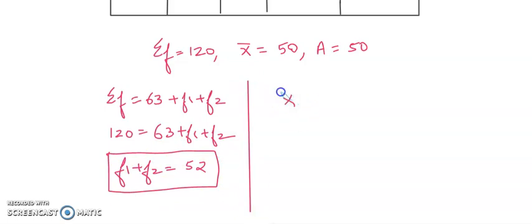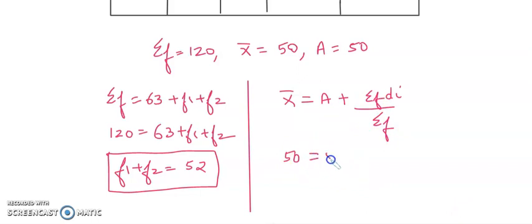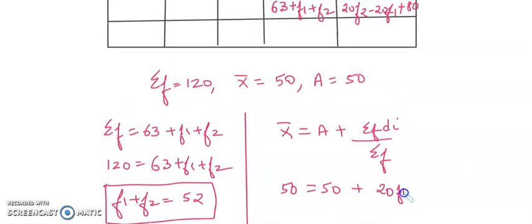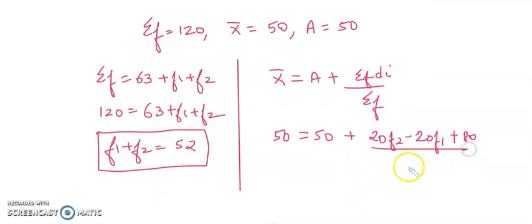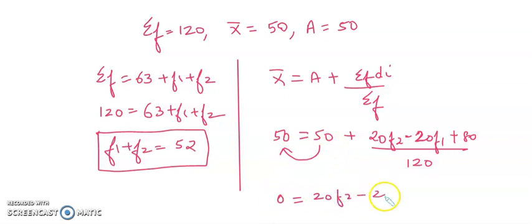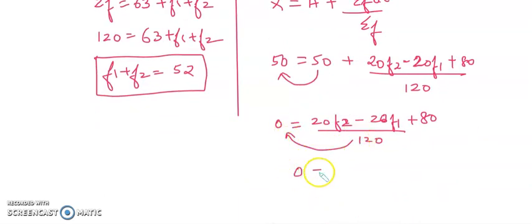Now for the second equation, use the mean formula: A plus sigma f*d_i divided by sigma f. X-bar is 50 and A is also 50. So 50 equals 50 plus (20F2 minus 20F1 plus 80) divided by 120. Subtracting 50 from both sides: 0 equals (20F2 minus 20F1 plus 80) divided by 120. Multiplying across: 0 equals 20F2 minus 20F1 plus 80.